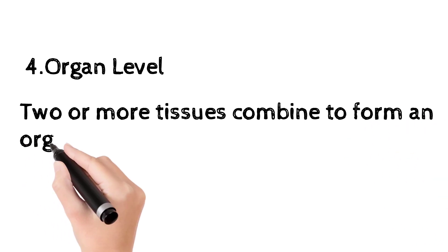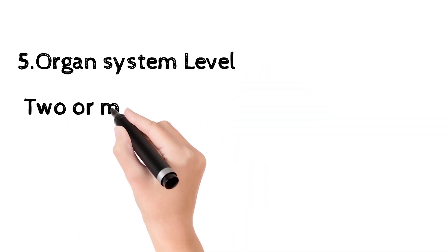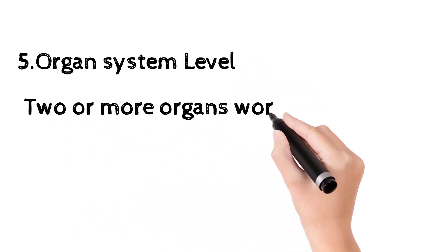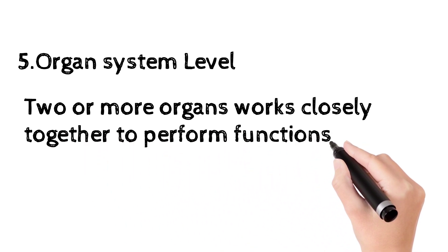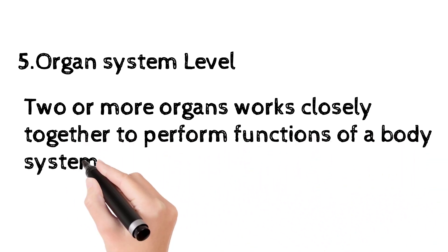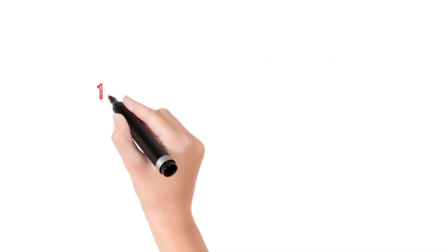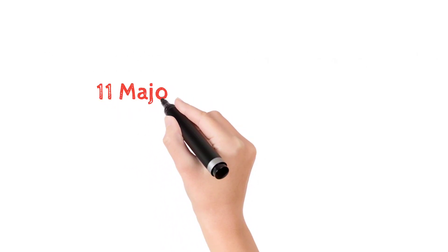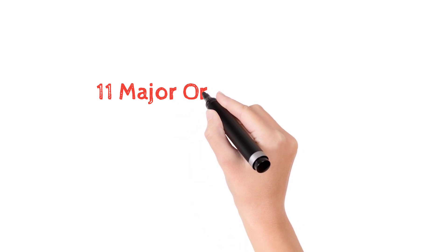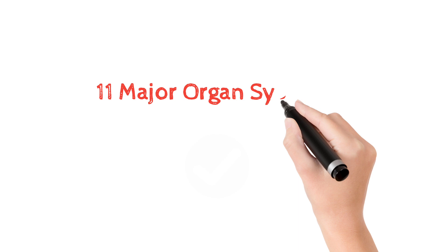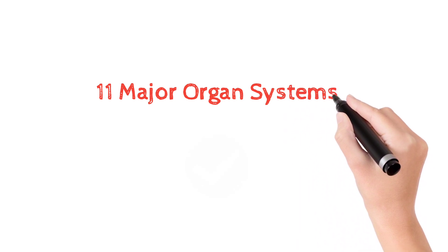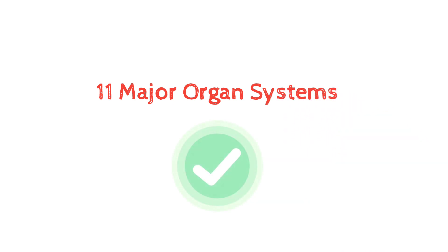The next level is the organ system level, where two or more organs work closely together to perform functions of a body. There are 11 major organ systems, and we are going to learn a brief explanation of each organ system.